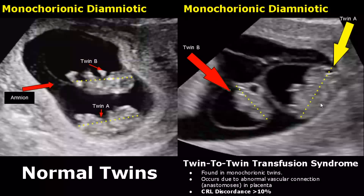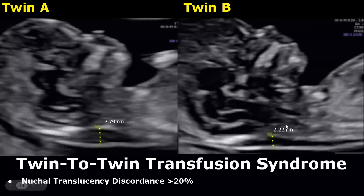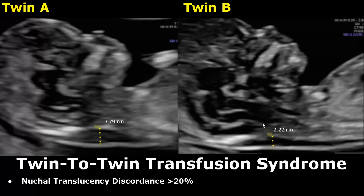Twin-to-twin transfusion syndrome is a complication found in monochorionic twins. It occurs due to abnormal vascular connection in the placenta. In the first trimester, we may start to see discordance between the CRL of the twins — a 10% difference in CRL measurement can be a sign of an impending twin-to-twin transfusion syndrome, with twin B smaller than twin A. A nuchal translucency discordance of greater than 20% is another sign, and here you can see a significant difference between NT values.